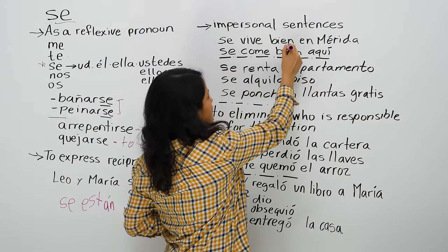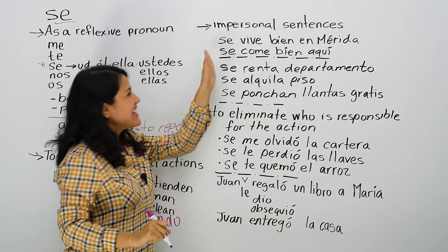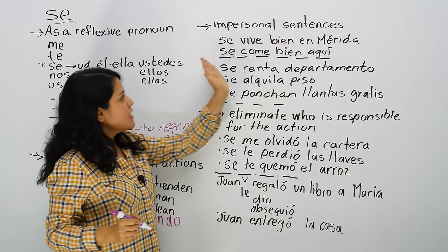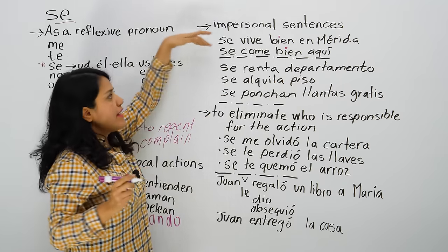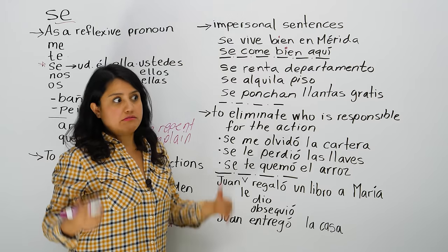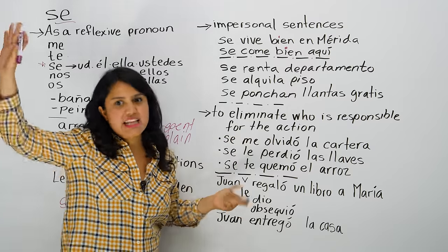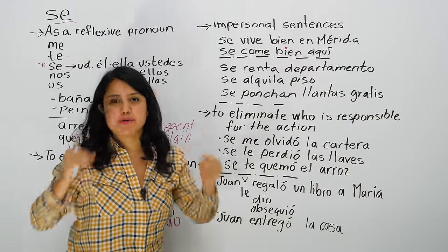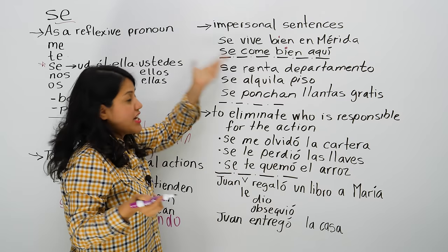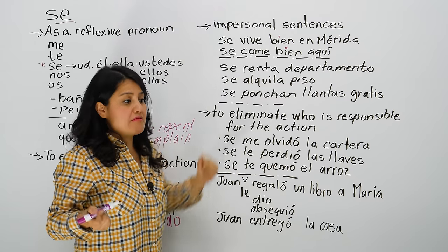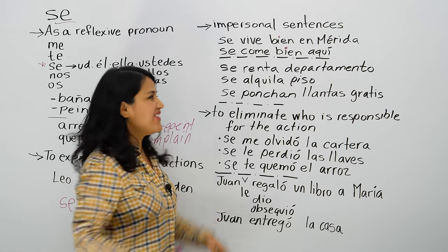For example: Se vive bien en Mérida — one lives well in Mérida. Se come bien aquí — one eats well here in this restaurant. We're not saying 'Roberto vive bien en Mérida' or 'yo vivo bien en Mérida.' We say one lives well, or they live well — not implying one specific person. Se come bien, se vive bien, se camina bien aquí.